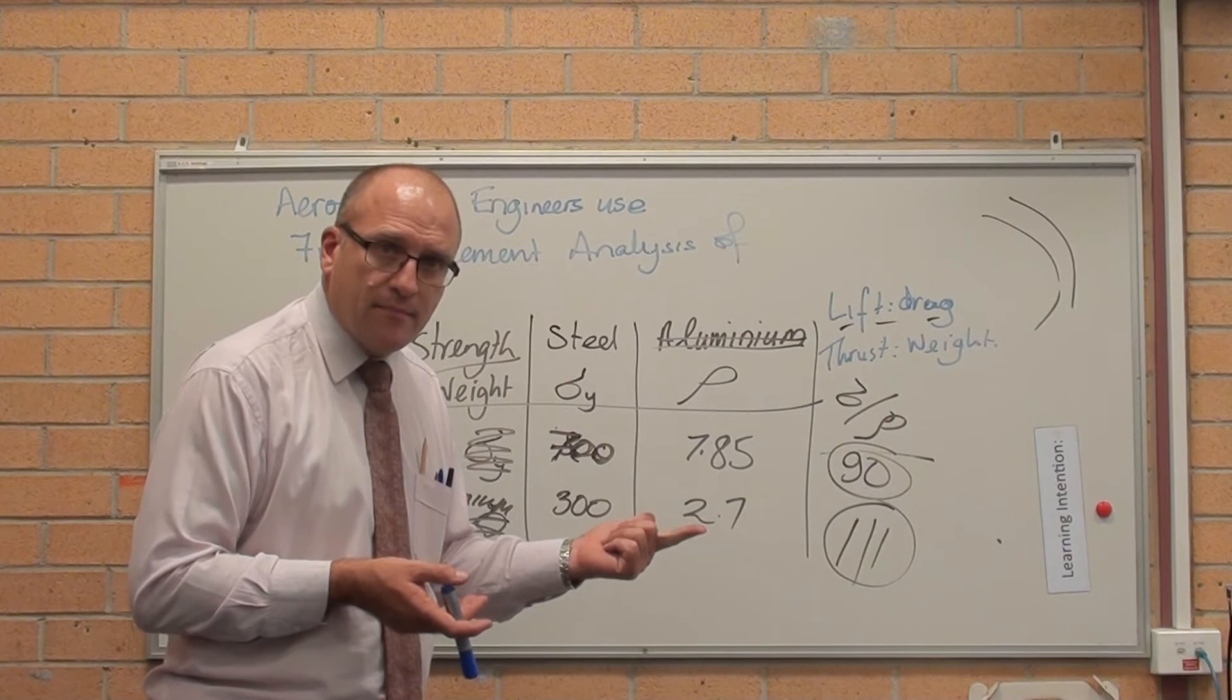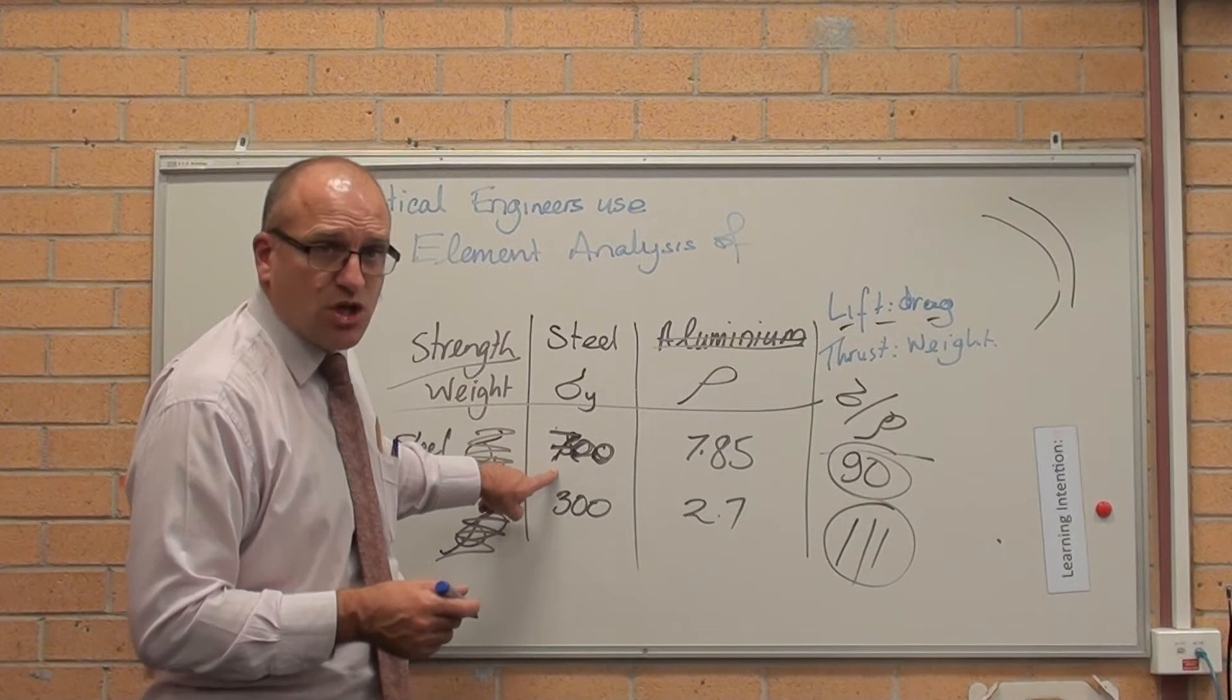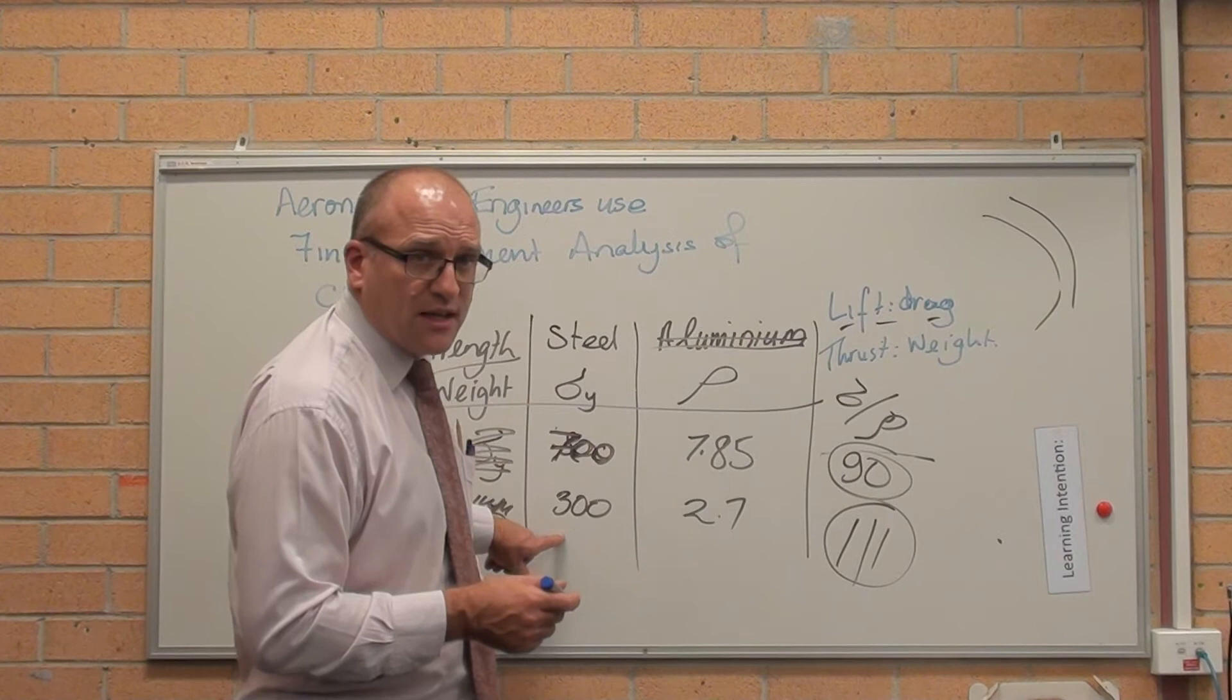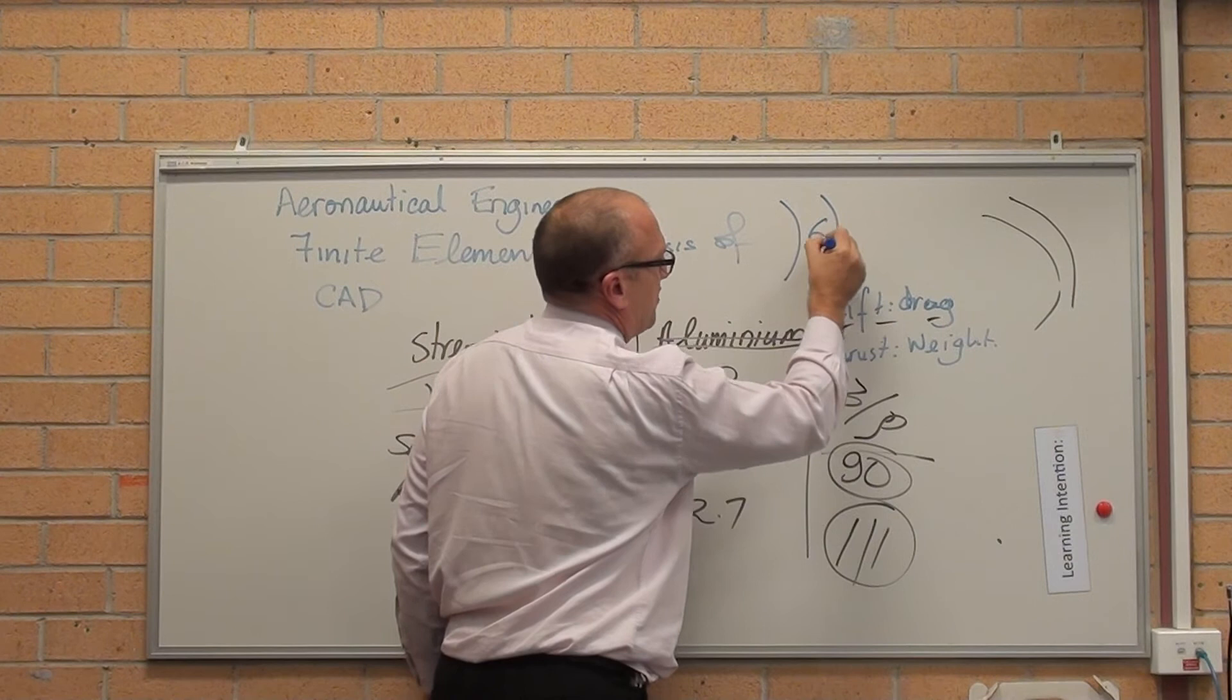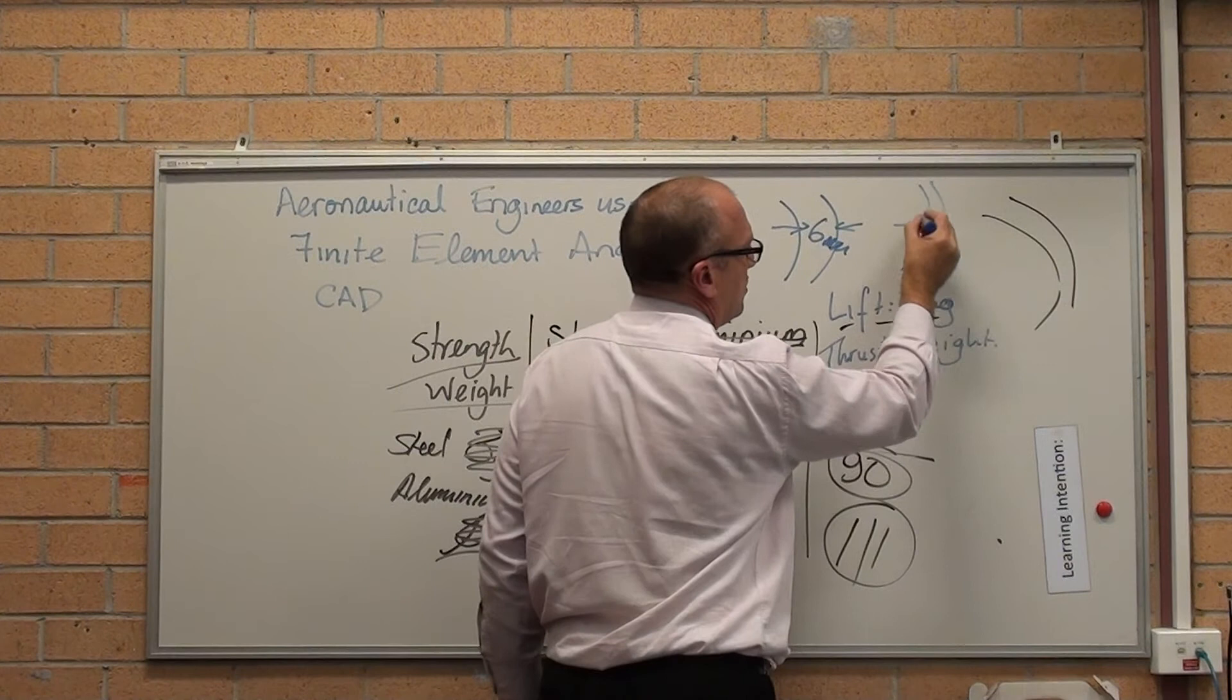What it does mean, however, is because steel is stronger in tension, I need around about half to one third of the thickness, depending. Which means if I've got an aircraft skin in aluminium that's 6 millimetres thick, an aircraft skin in steel would be 3 millimetres to 2 millimetres thick.